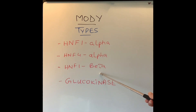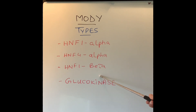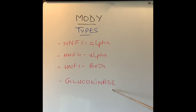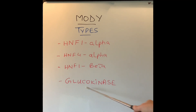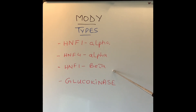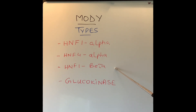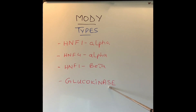HNF1-Beta is a very rare kind of MODY and usually requires insulin. Many of these patients also have cysts — little pockets — in the kidneys. Glucokinase MODY is the mildest type and does not require treatment in most patients; it is picked up by routine blood tests where blood sugar is slightly higher than normal. These other types of MODY can develop complications like problems with the eyes, blood vessels, high risk of stroke, heart attacks, ulceration of the limbs, and infection. Glucokinase MODY has a very low risk of complications.